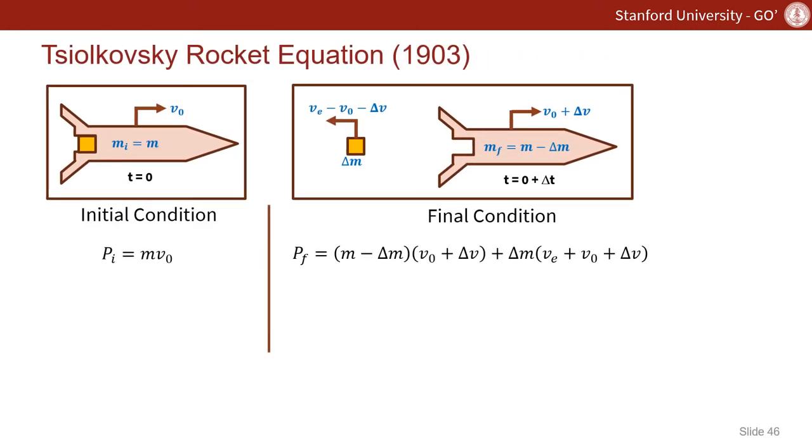A free-body diagram is shown as a methodology to solve Tsiolkovsky's rocket equation. If we look on the left-hand side at the initial condition, the initial mass is the structural mass of the rocket plus the mass of the propellant. Next, we look at the initial velocity, which could be due to Earth's rotational speed at a given latitude or could be due to the velocity of a parking orbit. The initial momentum is just going to be M times V0.